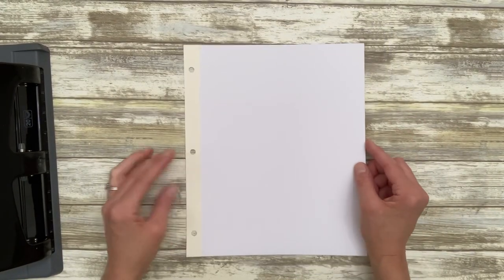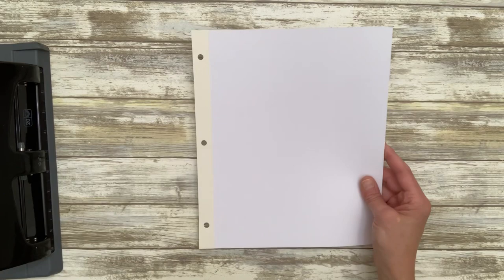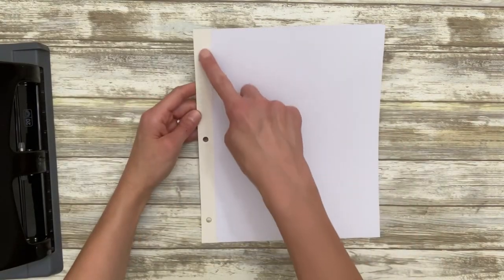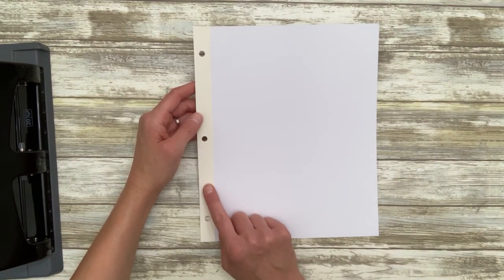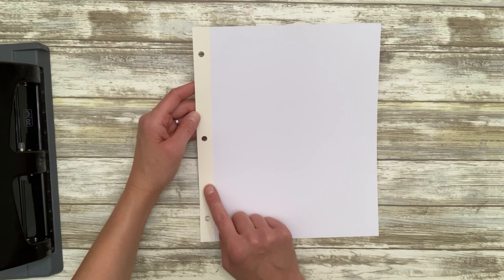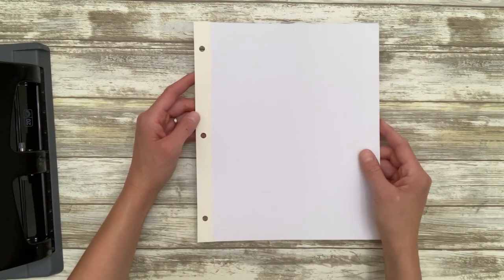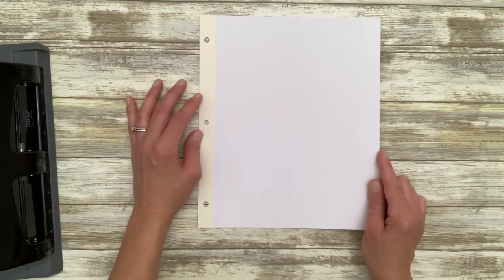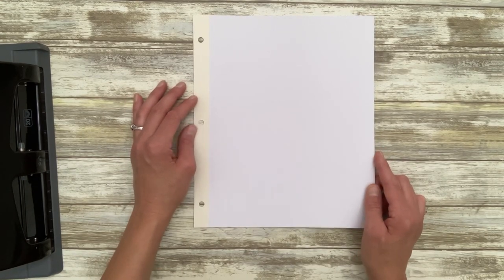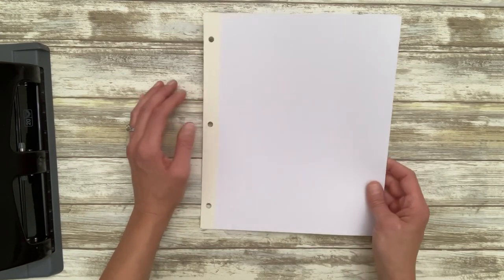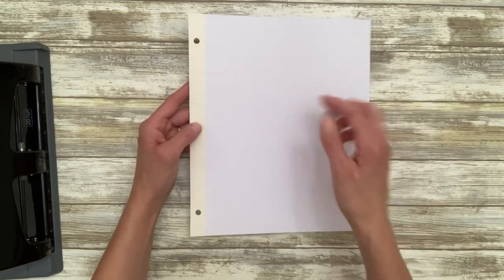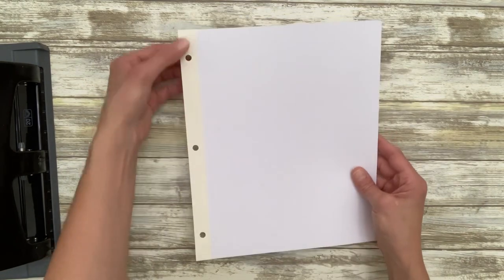And we have a completely prepped page. You're gonna do this for however many pages you want in your album. When it comes to this strip here, I usually do choose a cream because it's versatile and goes with everything. Especially if you know what your album theme is going to be, you can choose a color that complements all the different paper collections you may use. This is completely customizable. Choose whatever color you want for your base pages and whatever color you want for your reinforcement strips.